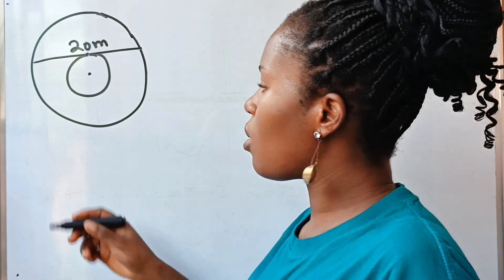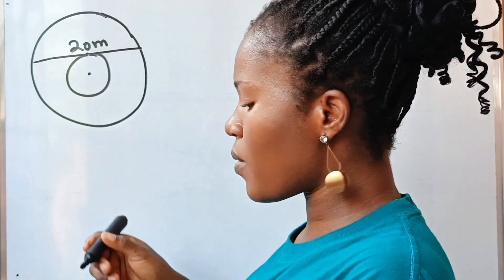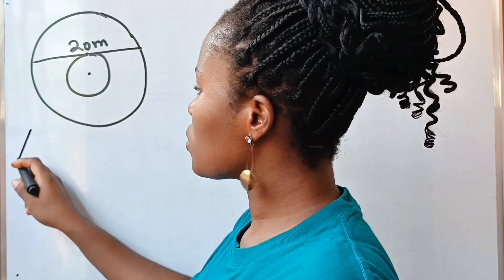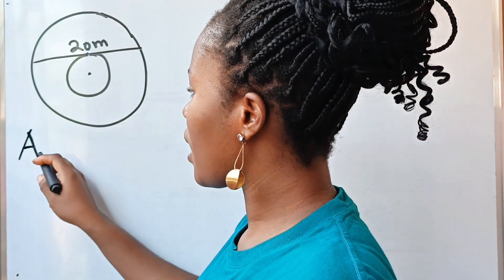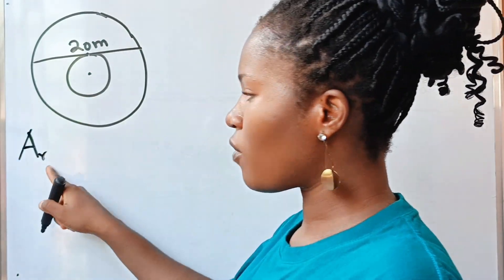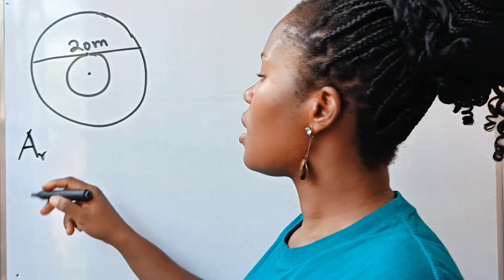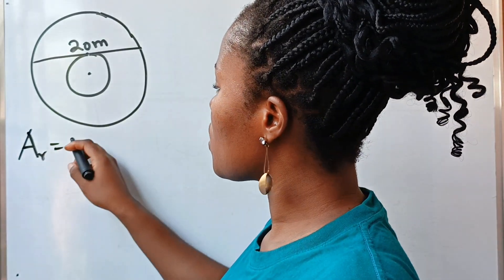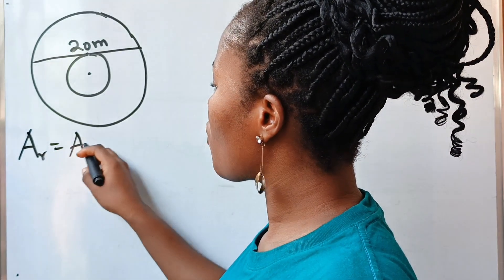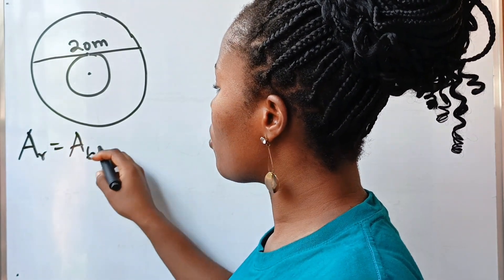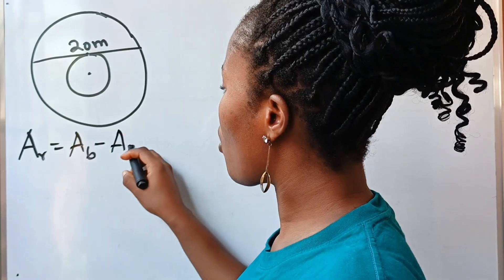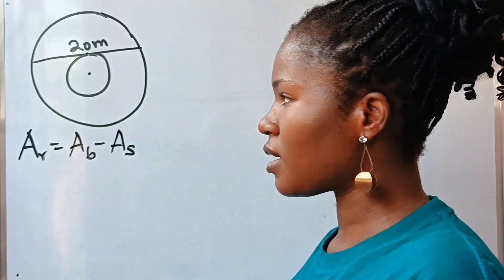Let the area of the ring be equal to A. The area of the ring is going to be equal to the area of the big circle minus the area of the small circle.